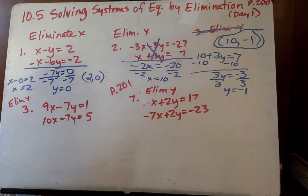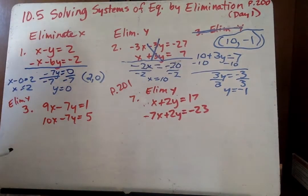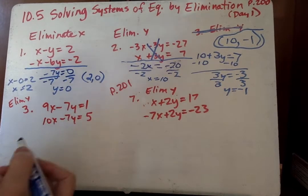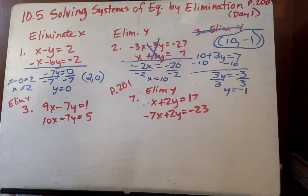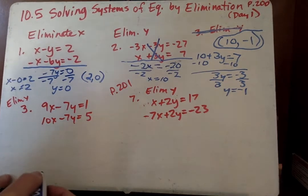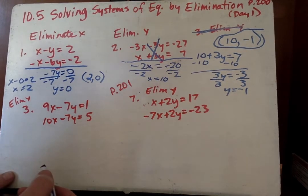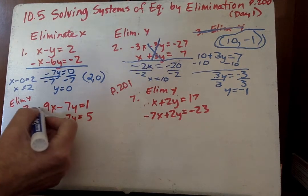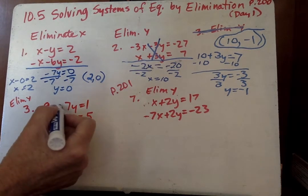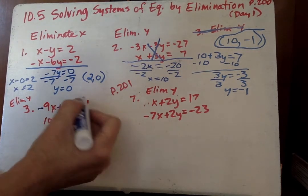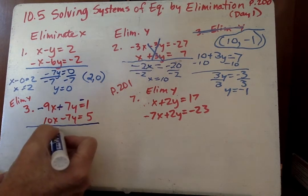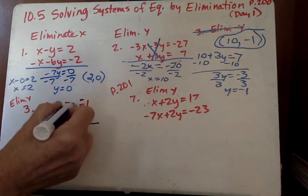I'm going to go ahead and do number 3 down here. And it says to eliminate y. One is negative 7y, negative 7y, so they're not opposites. So now we're going to make one of them opposite by multiplying one of them by a negative 1. And I'm going to go ahead and do that with the first one. Negative 9x plus 7y equals negative 1. Now I'm going to add the 2 and that's 1x equals 4, because these two go away.